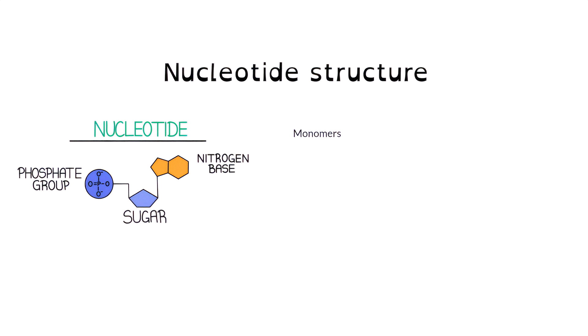Every nucleotide has three important components that make it up, and that is the phosphate group, the sugar, and the nitrogen base. Now the phosphate group gives it away. Essentially, it is a group of phosphate surrounded by oxygens, and it forms a part of what we call the backbone of a DNA molecule.